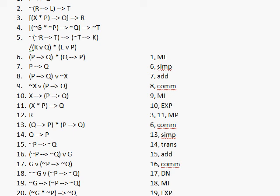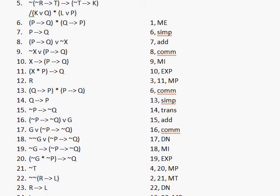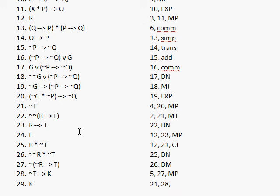Now that we have the negated conditional — the antecedent in premise 5 — we can get not T then K. So we'll get not T then K through 5, 27 modus ponens. And now that we have not T then K, I have not T in premise 21, so I can get K through 21, 28 modus ponens.